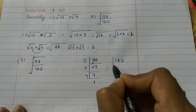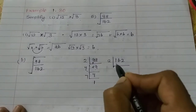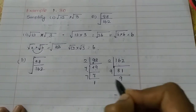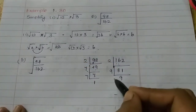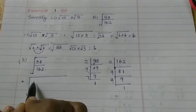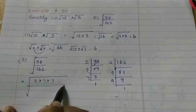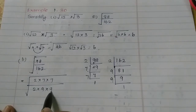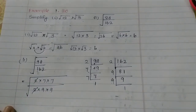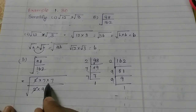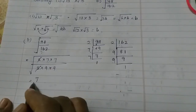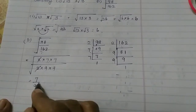That is 162. Using the 2 times table: 2 eights are 16. Then 81: 9 nines are 81. So we have root of 98 = 2 × 7 × 7, by 162 = 2 × 9 × 9. The 2s cancel, and we are left with root of 7 × 7 in the numerator and root of 9 × 9 in the denominator. So the answer is 7 by 9.